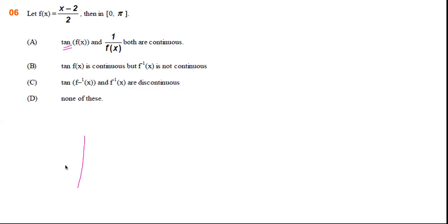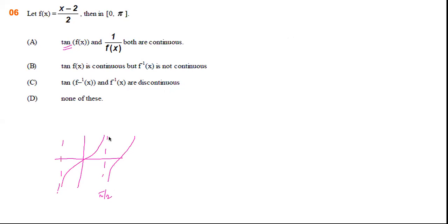Let us take a basic idea. This is the graph for tan. Tan becomes discontinuous at π/2 and at minus π/2. So if f(x) falls in the interval (minus π/2, π/2), we need to check whether the argument x minus 2 by 2 reaches those discontinuity points or not.